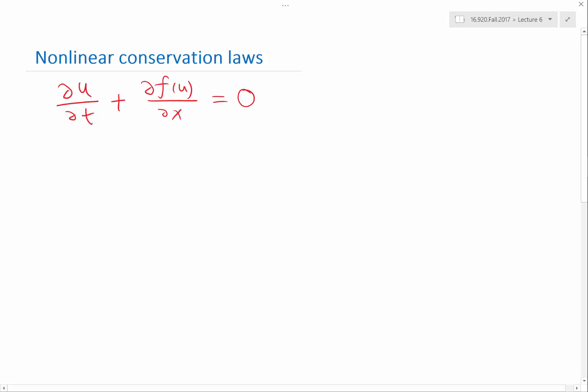So that's a one spatial dimension form of nonlinear conservation laws. Let's actually write it in more general form. This is a g.